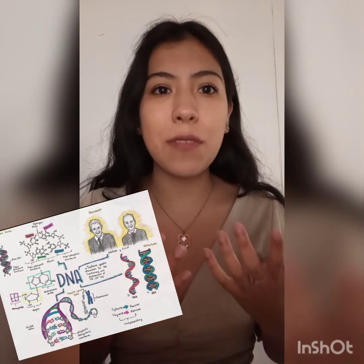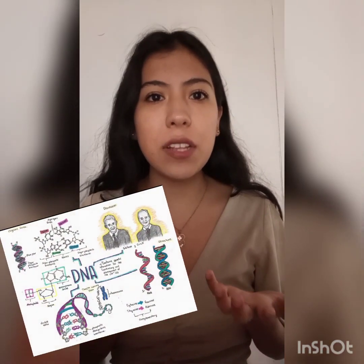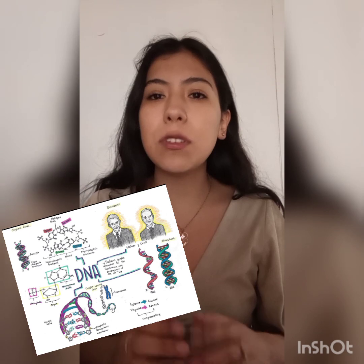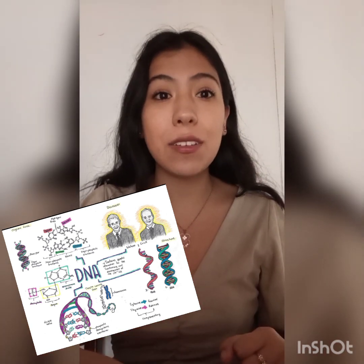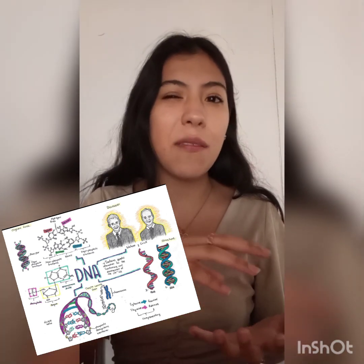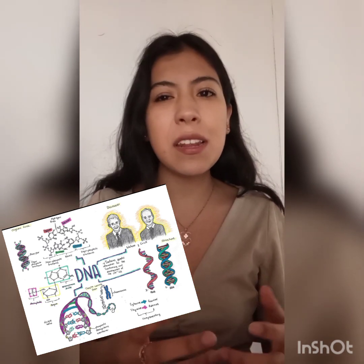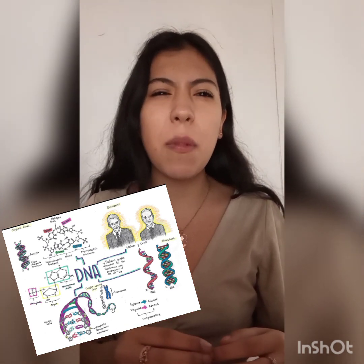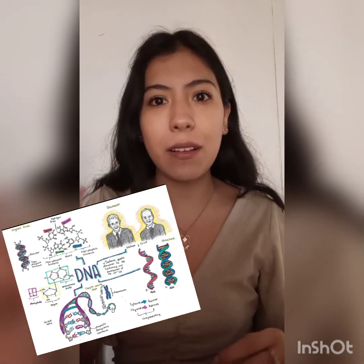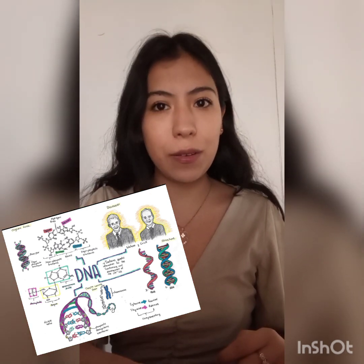To start talking about deoxyribonucleic acid, we must have a clear concept about this. It carries the information necessary for protein synthesis and internal replication. In almost all organisms, DNA is organized by chromosomes, located in the nucleus of the cell. Each DNA molecule is made up of two chains of a large number of chemical compounds, called nucleotides.